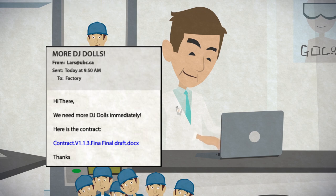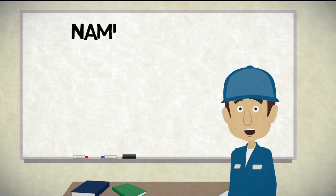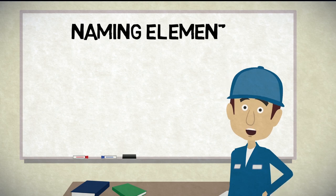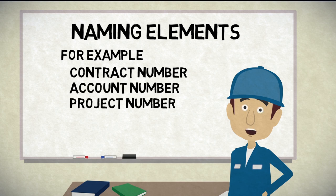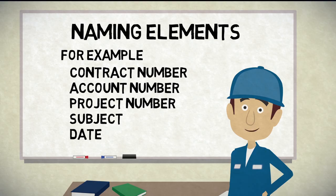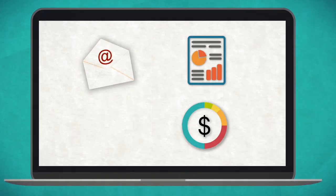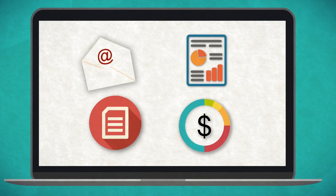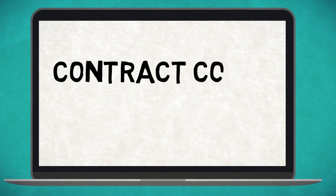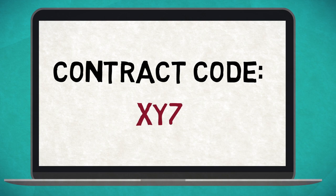The form of the file name should be predictable. To achieve predictability, we separate the name into unique elements, which can include a contract number, account number, or project number, but will always include a subject and, most of the time, a date. There could be plenty of emails, reports, and budgets relating to this contract. The best way to keep all the information together is to use a contract code — for example, XYZ — as the first element of the file name.